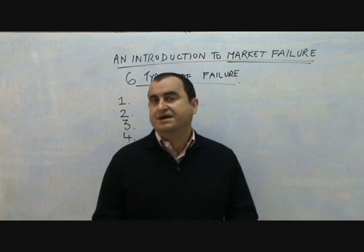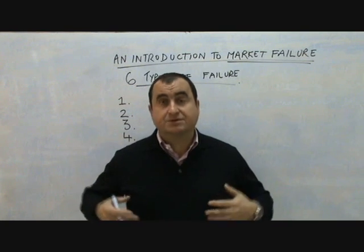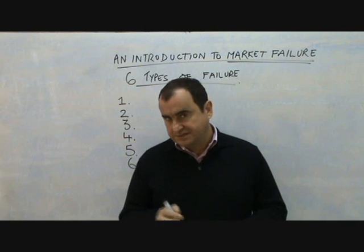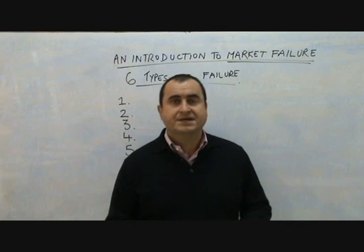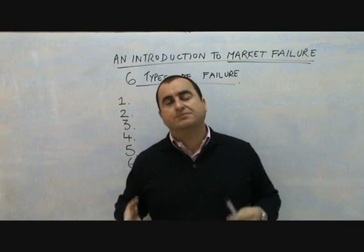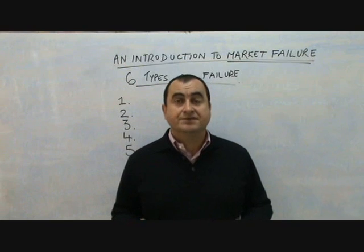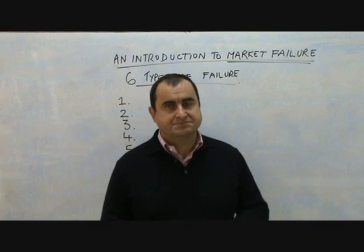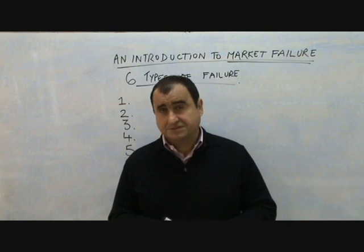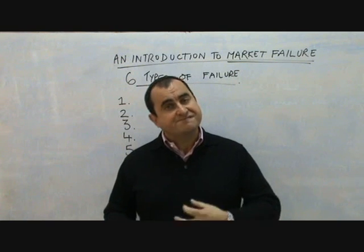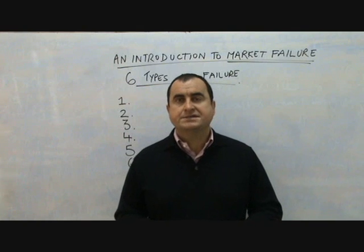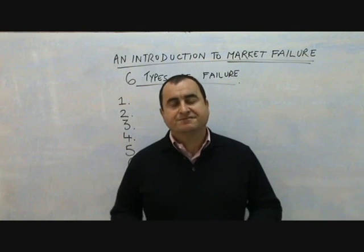When we have market failure, it is required for the government to intervene and try to correct that market failure in a variety of ways. In this video, I want to take you through six types of market failure — six ways in which the market forces, the price mechanism, the invisible hand as Adam Smith called it, fail us and fail to give us the best level of output, failing to allocate unlimited resources efficiently.